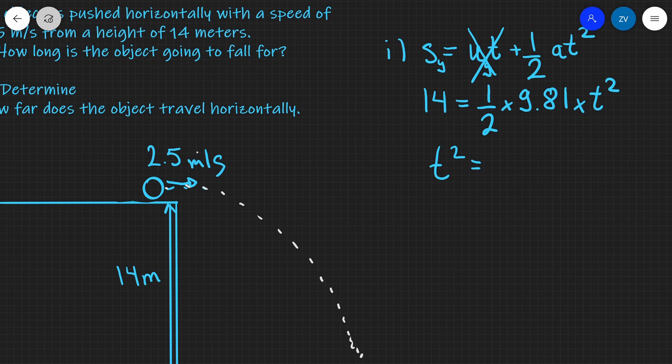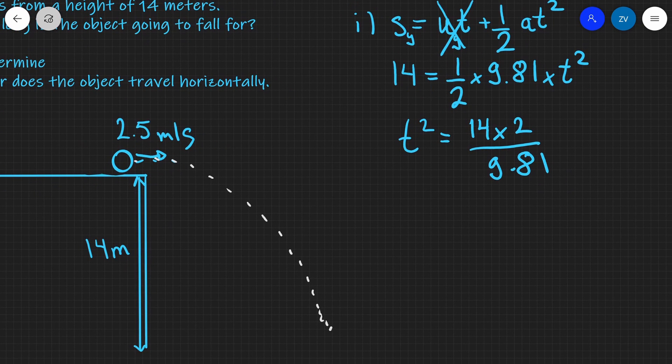So we can go ahead and rearrange for t squared which is going to give us 14 times 2 divided by 9.81 and what I'm going to do is I'm just going to square root everything so I'm going to get rid of this square sign and I'm going to square root this and if I plug this into a scientific calculator I'm going to get about 1.689 so let's just leave that as 1.7 seconds up to two significant figures.